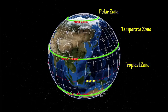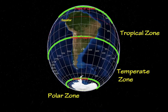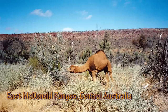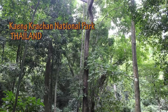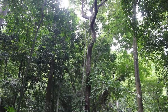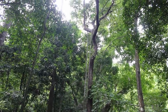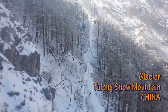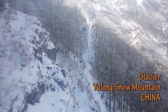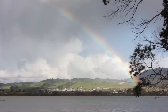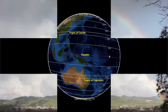Around the world there are different climate zones. In some regions there are hot and dry deserts. In other places there are warm and wet tropical rainforests, while other places are covered in ice. Why is this so? Now let's examine the main factors that influence the climate of a region.